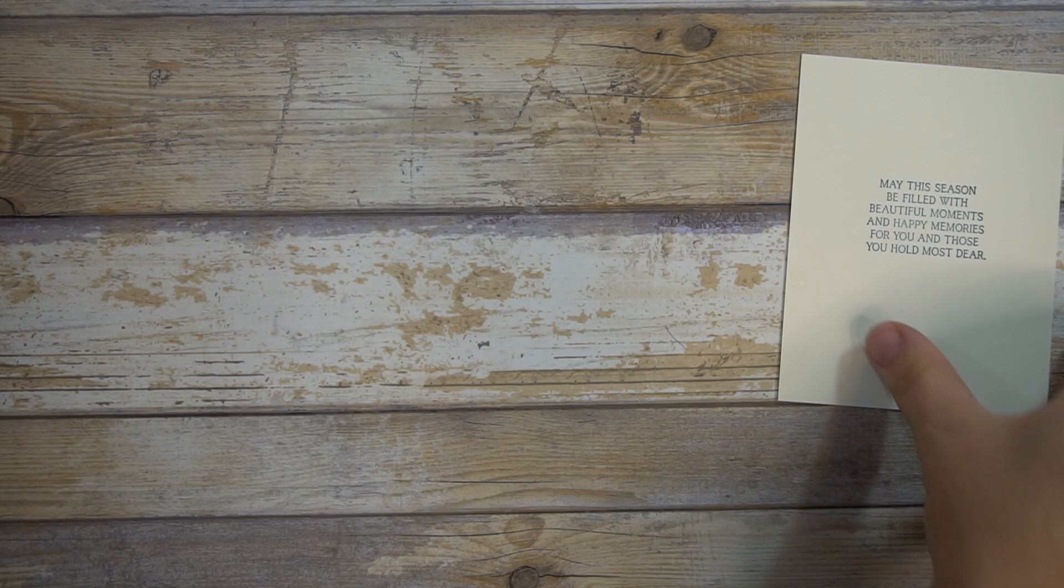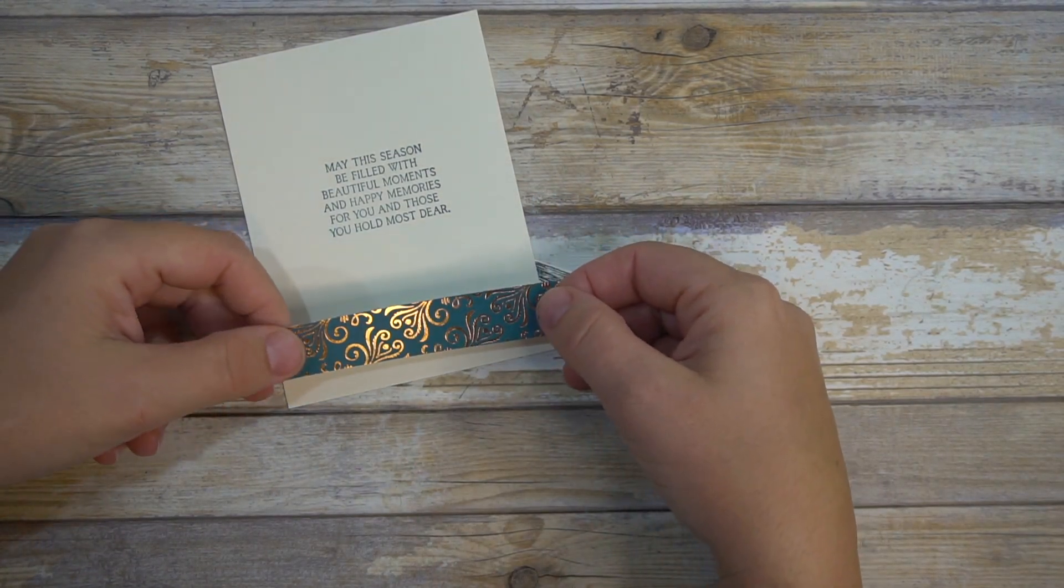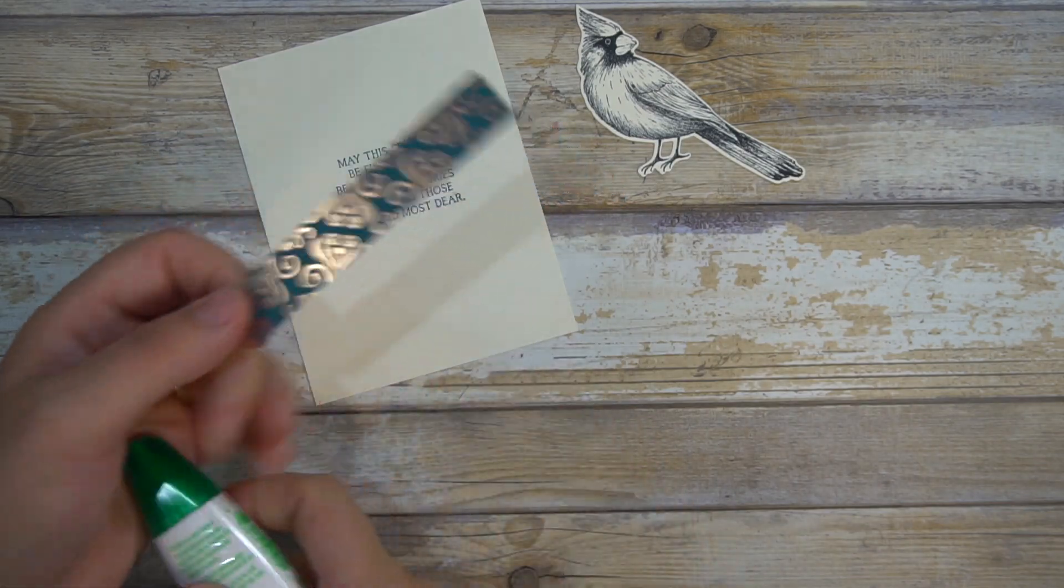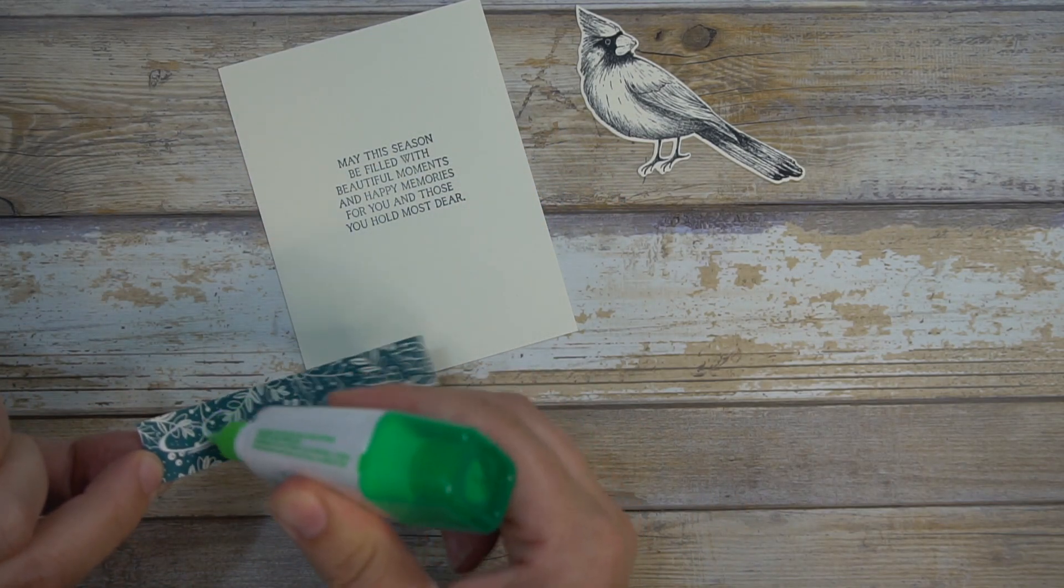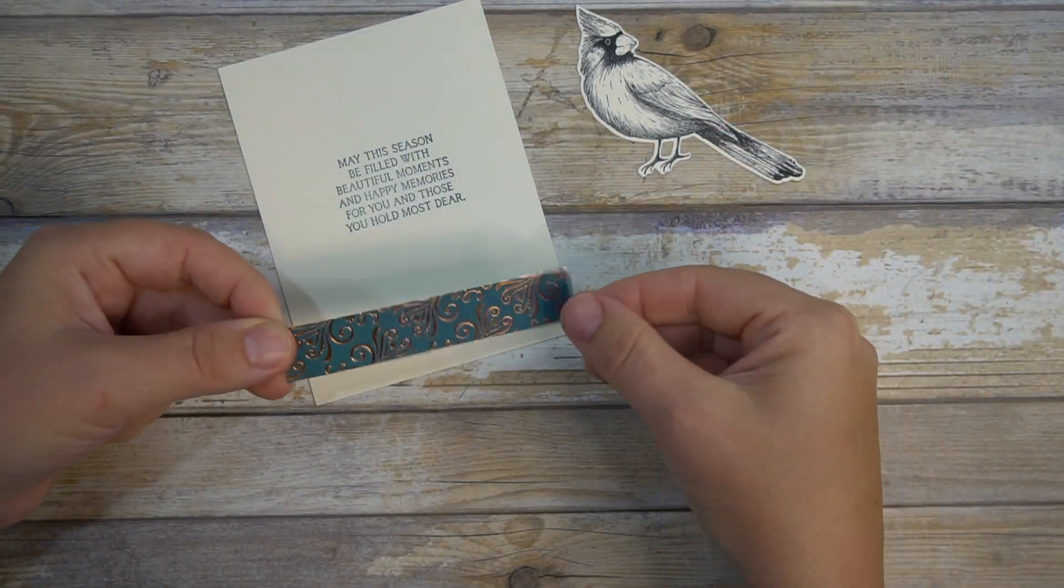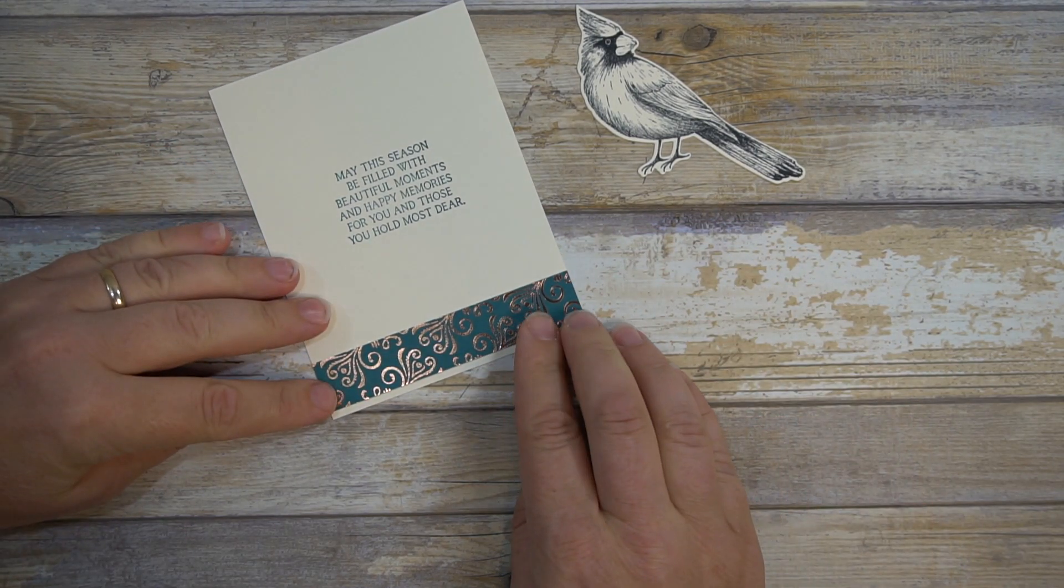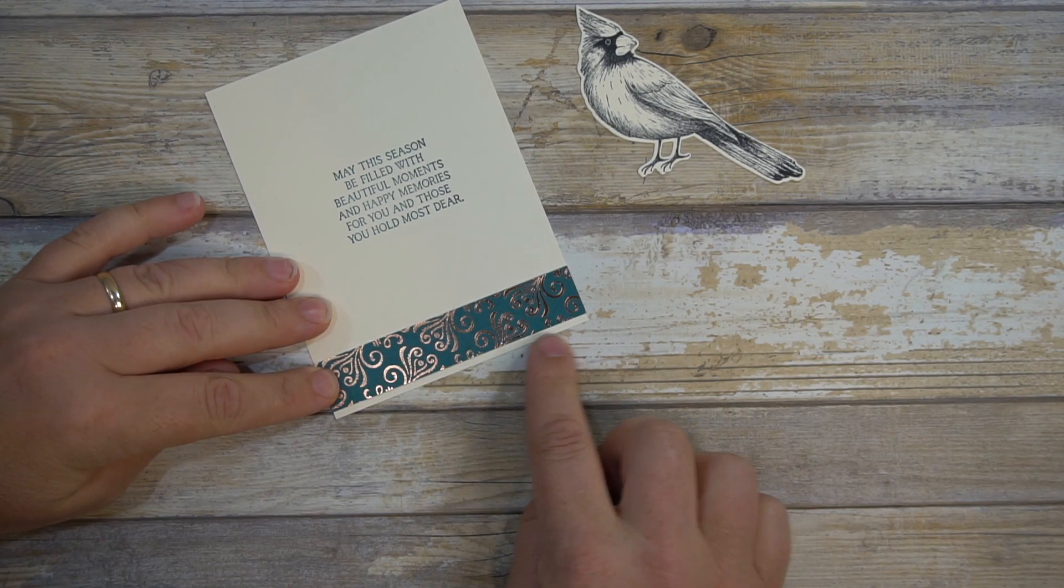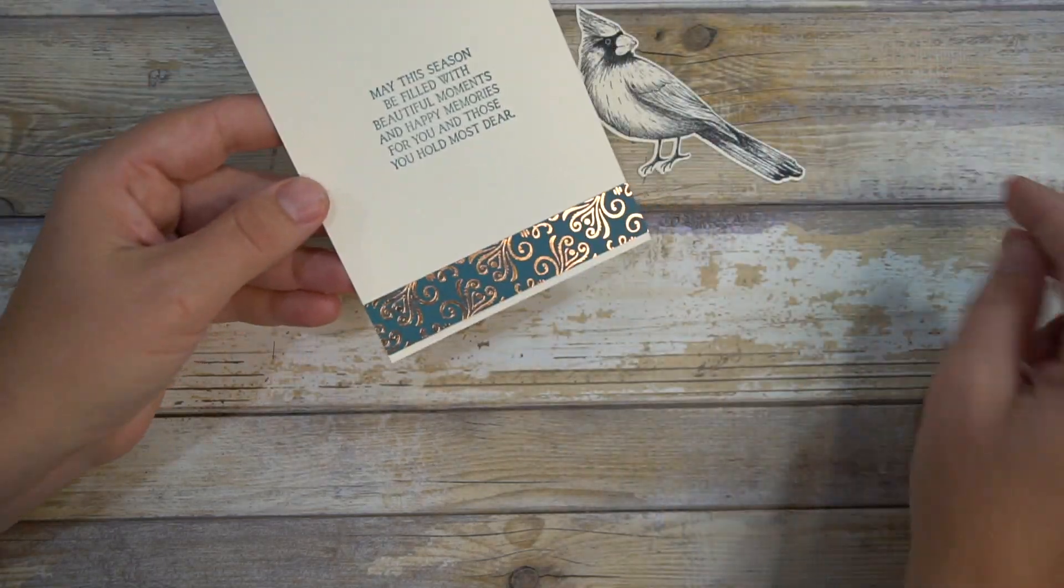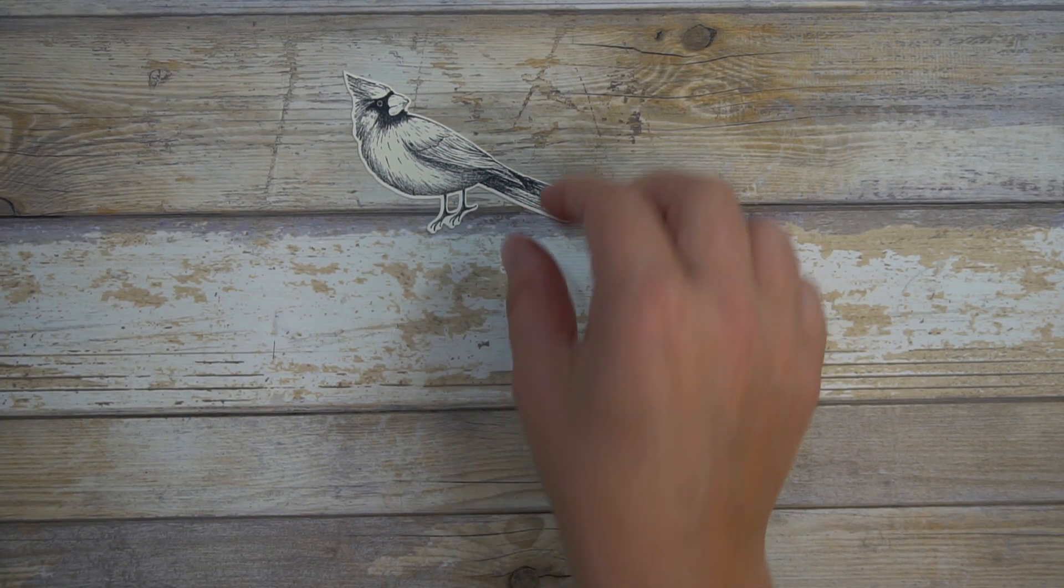So setting that aside I will add a little DSP to the bottom here and this is from the Brightly Gleaming Specialty DSP. It's just beautiful and it really ties in this whole copper scroll look because on the front of our card we use that scroll embossing folder. I like leaving a little bit of a white space there but that is the inside so we're going to set that aside until the end and right now I'm going to go ahead and start some coloring.